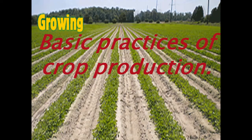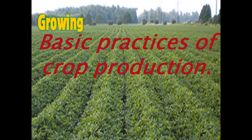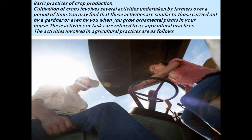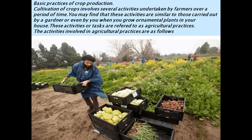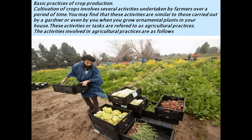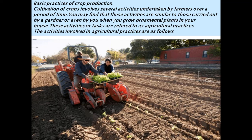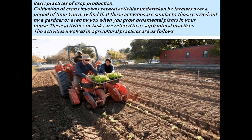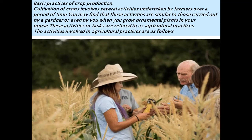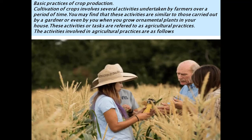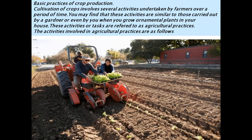Cultivation of crops involves several activities undertaken by a farmer over a period of time. You may find that these activities are similar to those carried out by a gardener, or even by you when you grow ornamental plants in your house. These activities are referred to as agricultural practices. As you can see in this picture, the various agricultural practices.